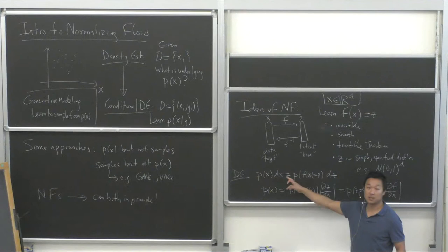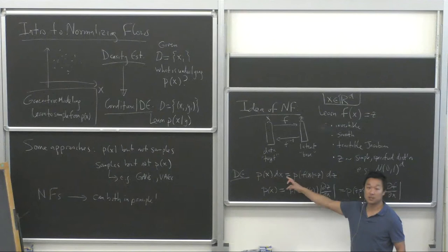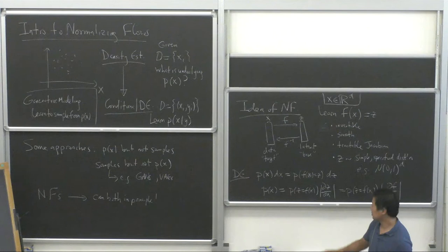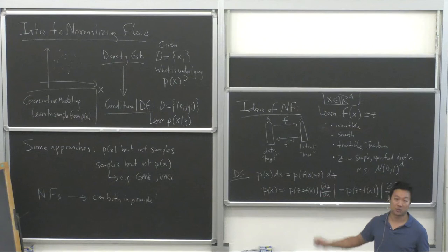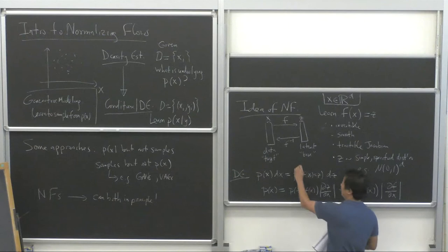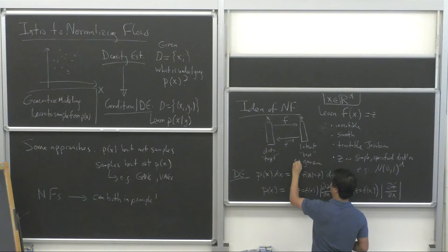I'm overloading notation here — it's not the same P. The P of X is the one we want to know, and the P of Z is the Gaussian we specify in advance. So this P is the Gaussian, and this other one is what we want to learn.